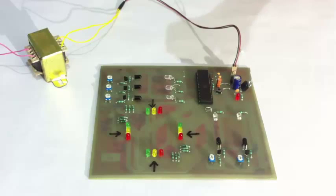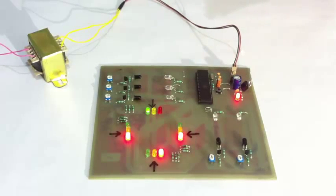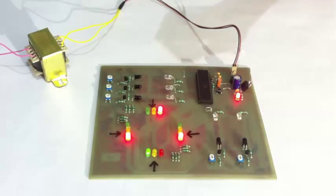So let's see how the system works. We are using an 8051 family microcontroller here for managing the entire process. When there is no density at any of the roads, the lights are designed to operate for three seconds each for demonstration purpose.